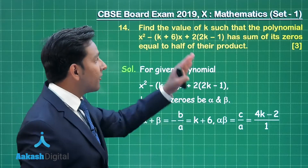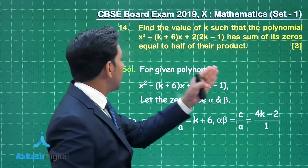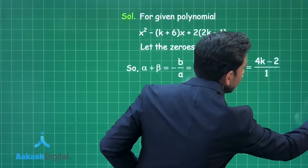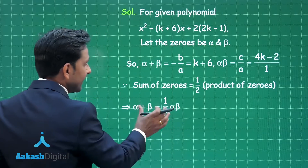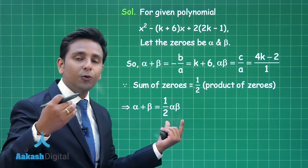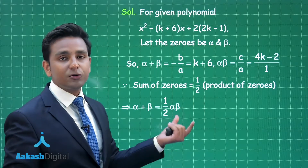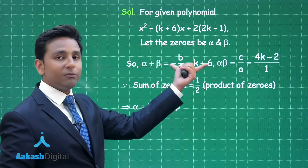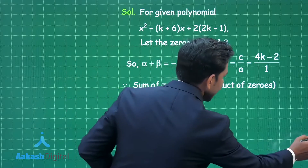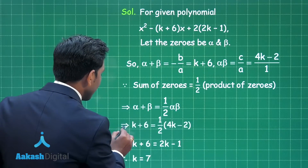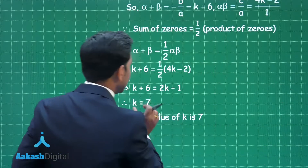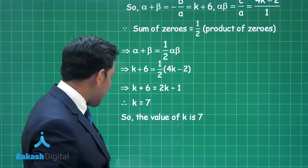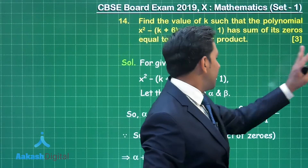Now using the given information — sum of zeros equals half of their product — we represent this mathematically: α + β = (1/2)(α × β). Substituting the values of α + β and α × β from the previous step, we obtain an important relation, and from this relation we can easily find the value of k, which is equal to 7. This is the final answer.